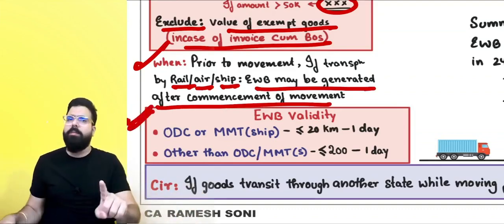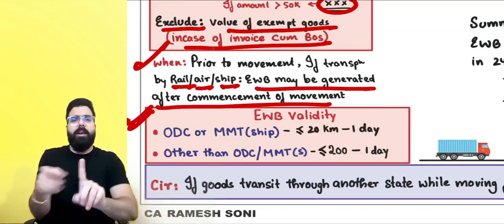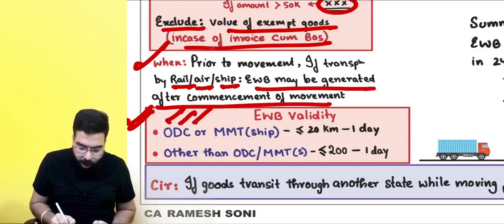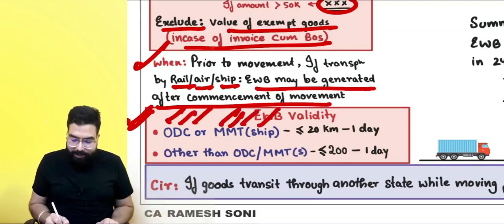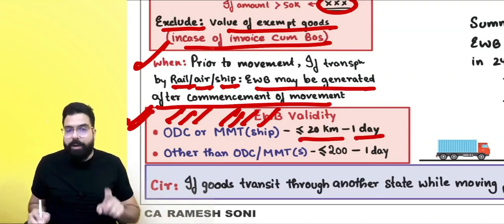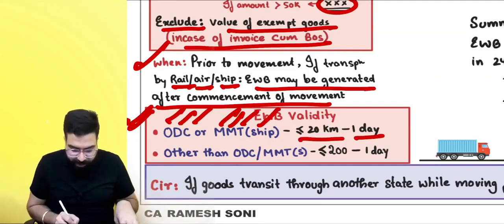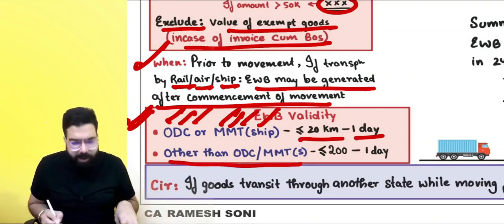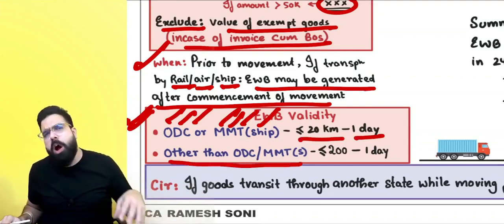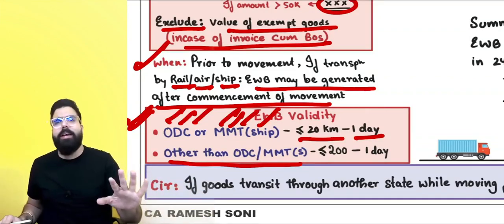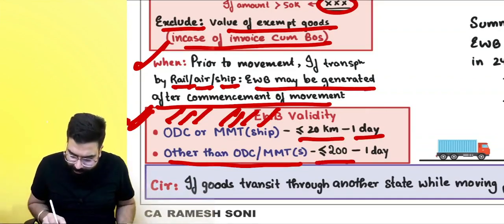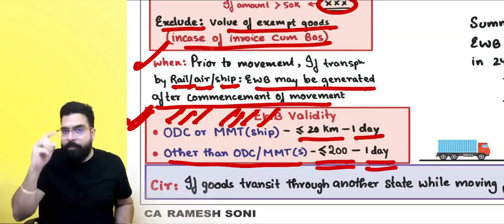Validity of the e-way bill: for over-dimensional cargo (ODC) or multimodal transportation involving a ship, validity is one day for up to 20 kilometers. For all other cases (other than ODC or multimodal with ship), validity is one day for up to 200 kilometers.